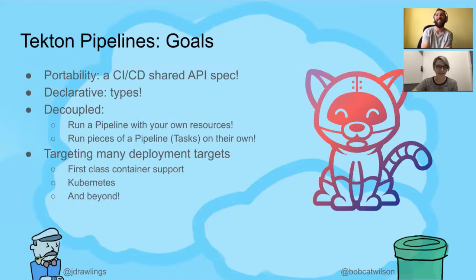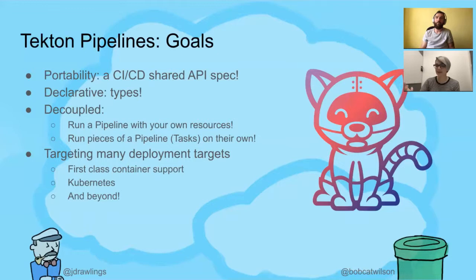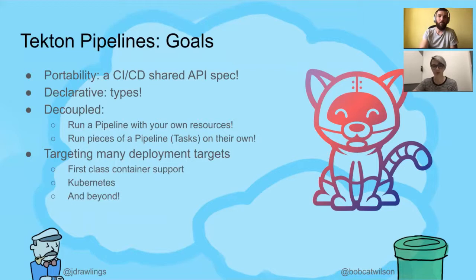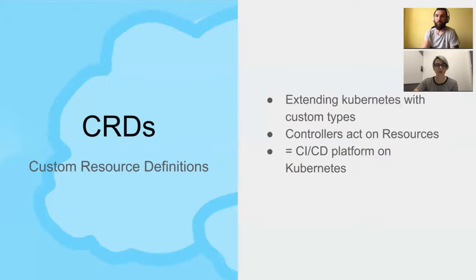The goals of Tekton Pipelines include portability between CI/CD vendors. When you're using Tekton Pipelines, you're using an API spec that any CI/CD vendor could comply with, so you could potentially write your pipeline once and use it with a variety of different tools. We also wanted to add types into pipelines and have them be decoupled, so you can take a really complex CI and run it against your own environment, or take pieces and run them in isolation.